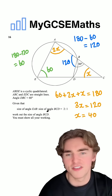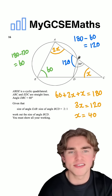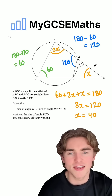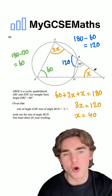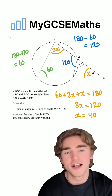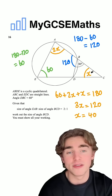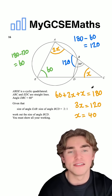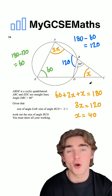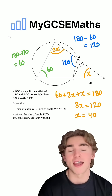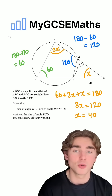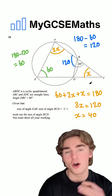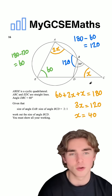The question asked for the size of angle BCD, and we've now worked out that angle BCD is just X, which is 40 degrees. So we used a couple of circle theorems — opposite angles in a cyclic quadrilateral.